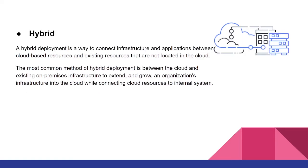The second one is hybrid. A hybrid deployment is a way to connect infrastructure and applications between cloud-based resources and existing resources that are not located in the cloud. The most common method of hybrid deployment is between the cloud and the existing on-premises infrastructure to extend and grow an organization's infrastructure into the cloud while connecting cloud resources to internal systems.